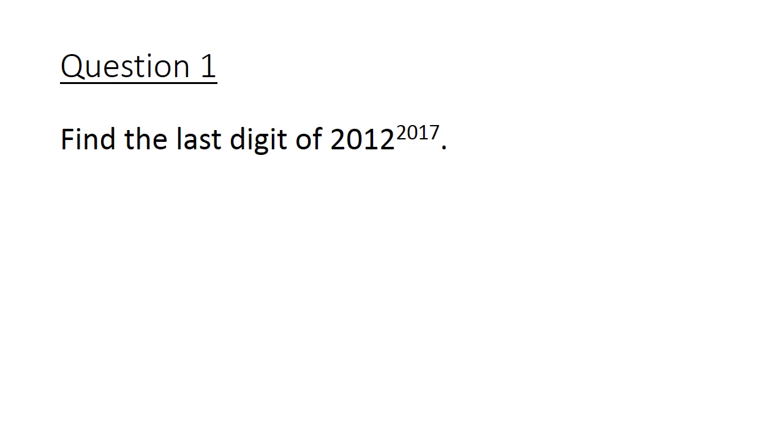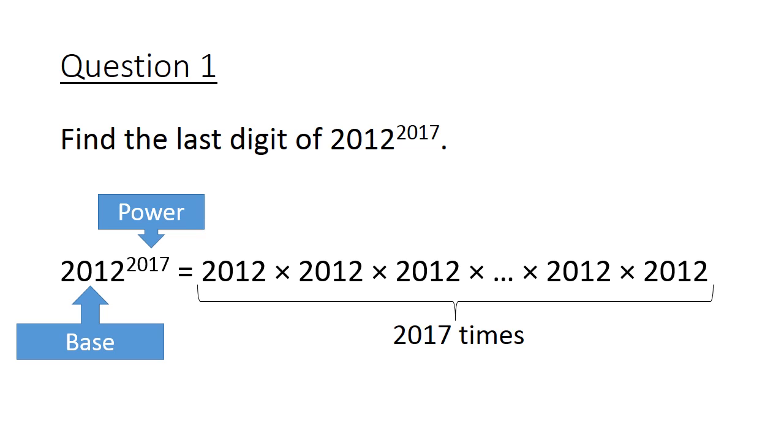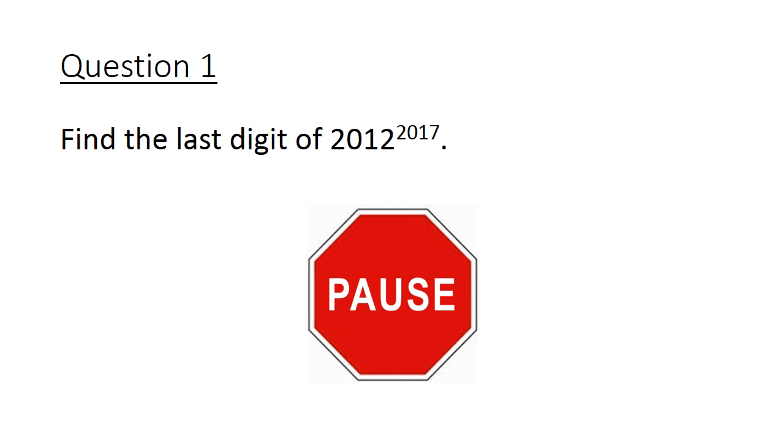So let's jump straight to the first of today's math problems. Find the last digit of 2012 to the power of 2017. Some quick definitions. This way of writing large numbers is called index notation. 2012 here is also known as the base and 2017 can either be called the power, the index, or an exponent. What it means is to multiply 2012 by itself 2017 times. I'm going to ask you to pause the video here to try this question.